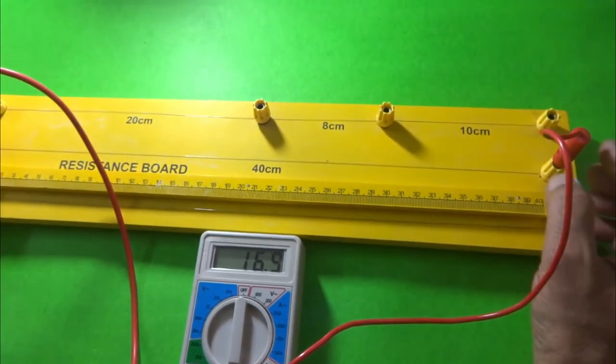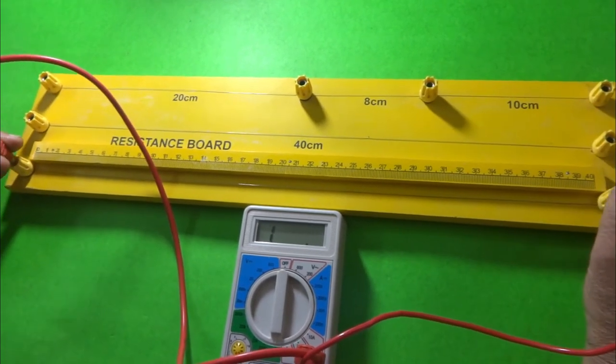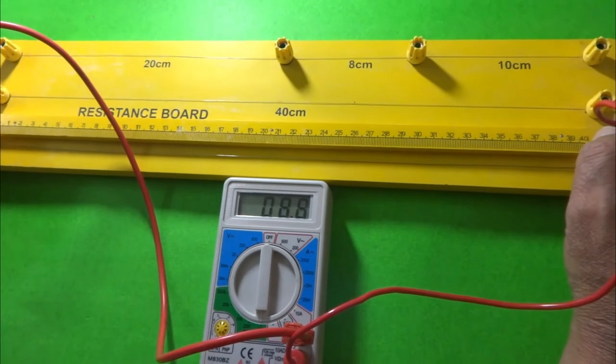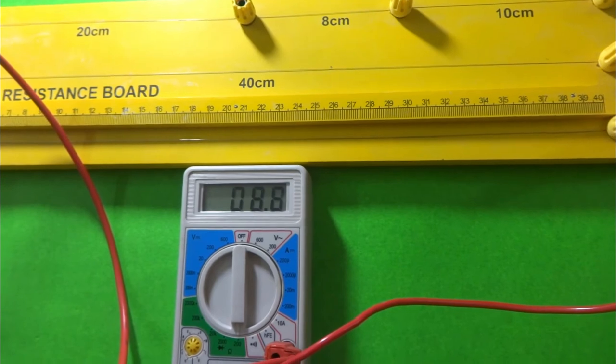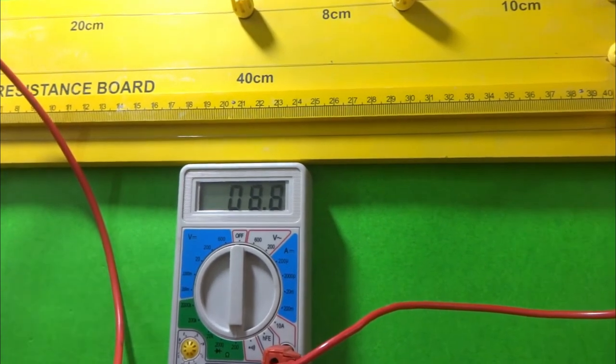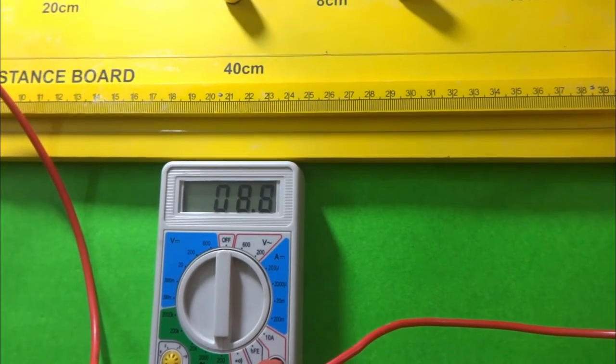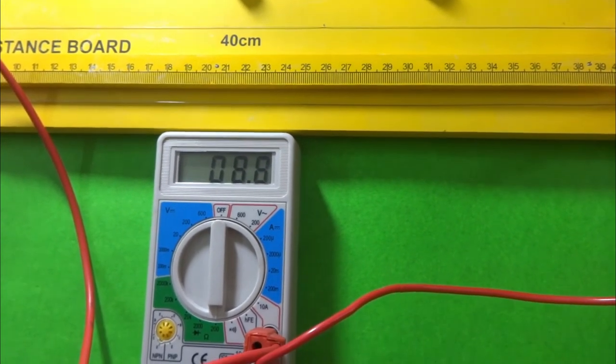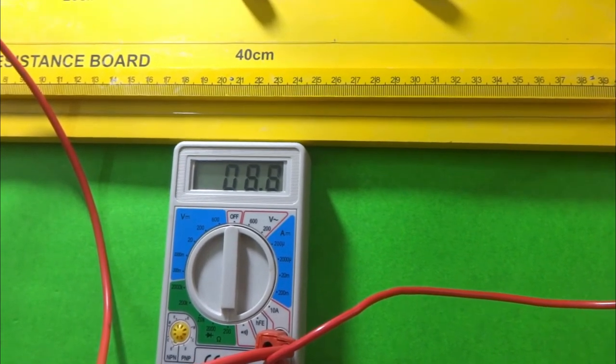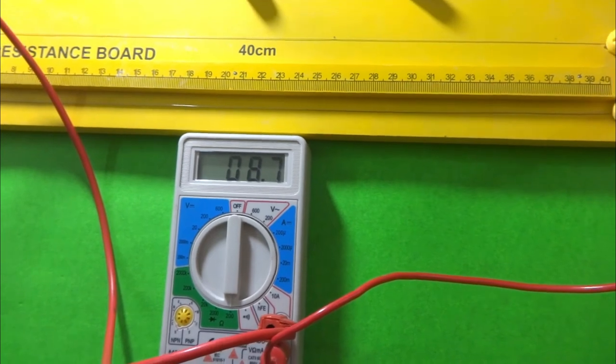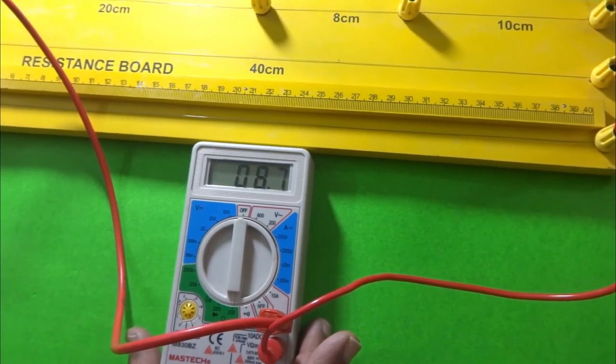Let us connect the multimeter across the thick wire. This thick wire showing very small resistance because the area of cross section of thick wire is more. Therefore, the electrons can freely flow through the conductor and hence the resistance is reduced. Here the resistance is shown as 8.7.